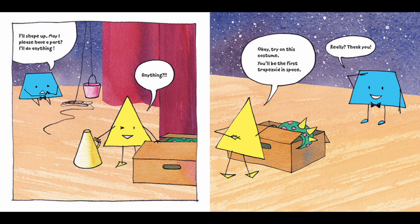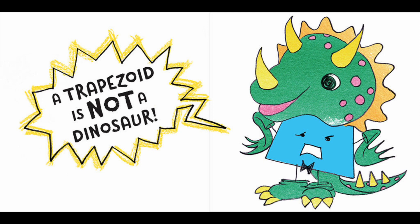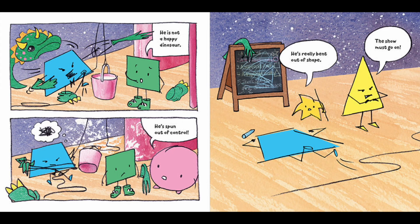Really? Thank you. A trapezoid is not a dinosaur. He is not a happy dinosaur. He's run out of control. He's running back out of shape. The show must go on.